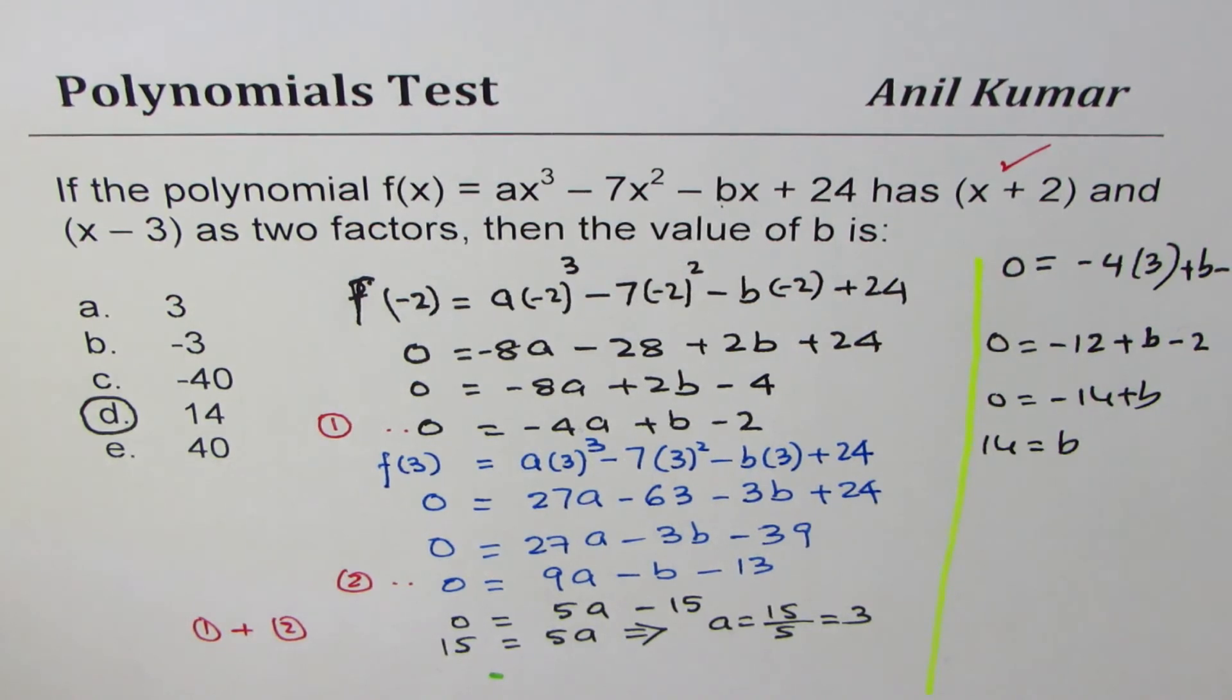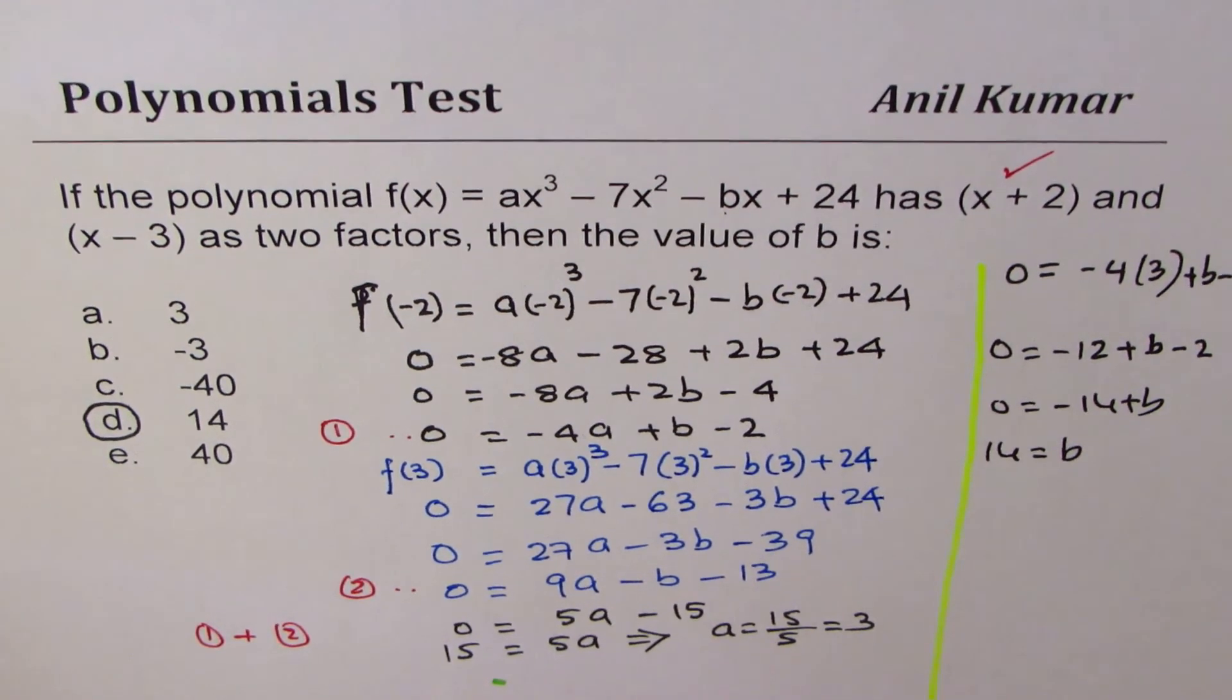So, basically, we formed two equations with the two conditions given. Factors, remember, should give you 0 remainder, and that was the key to it. I hope you appreciate it, feel free to post questions, and subscribe to my videos. Thank you, and all the best.